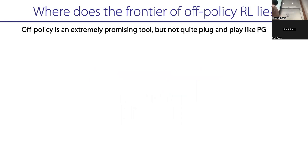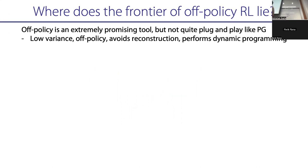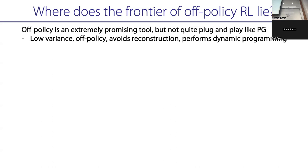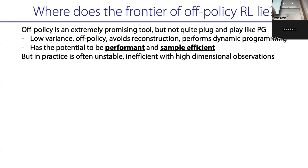Off-policy RL is promising and seems to work a lot better than policy gradient because it's so much more sample efficient, but it's not so plug-and-play. Like normally if you take a problem and throw PPO at it, it'll work eventually — it'll just take five days to train — whereas off-policy RL, when it works, will take three hours, but you don't know when it'll work and when it won't.